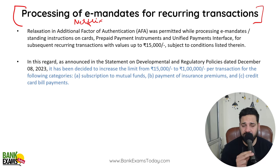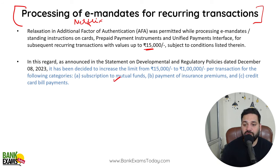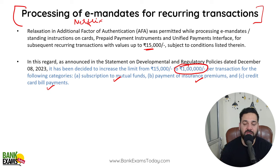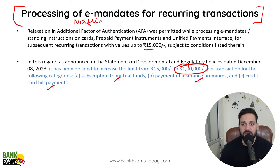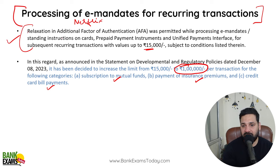RBI increased the limit. In the past, the limit was 15,000 rupees. But for investments in mutual funds, payment of insurance, and credit card bill payment, the limit has been increased to 1,00,000 rupees per transaction. In these cases, there is relaxation in the additional factor of authentication — OTP is not necessary while processing e-mandates, standing instructions on cards, prepayment instruments, and UPI.